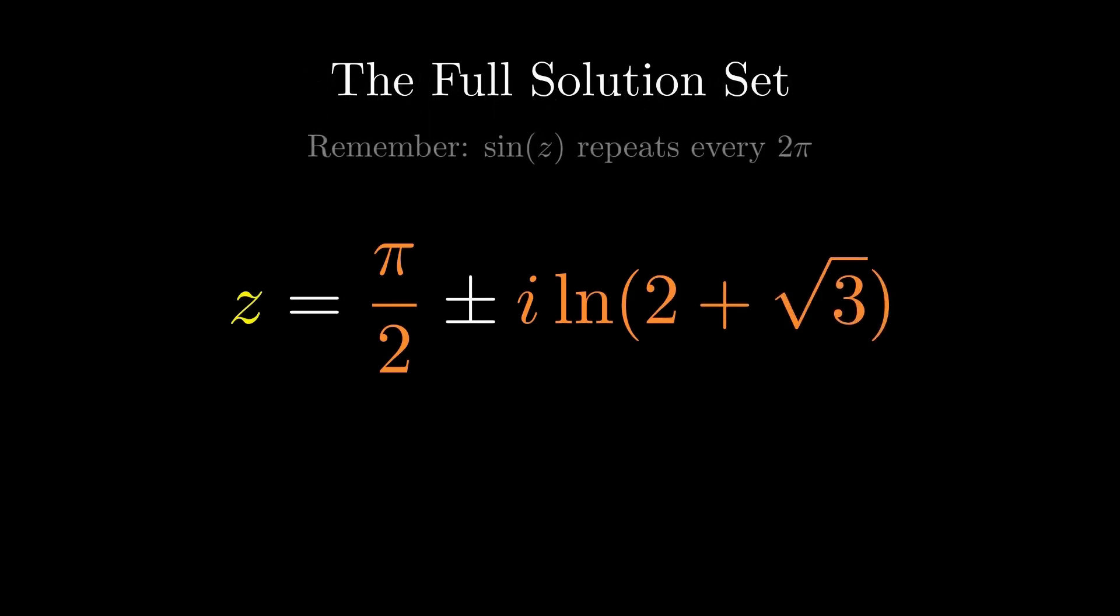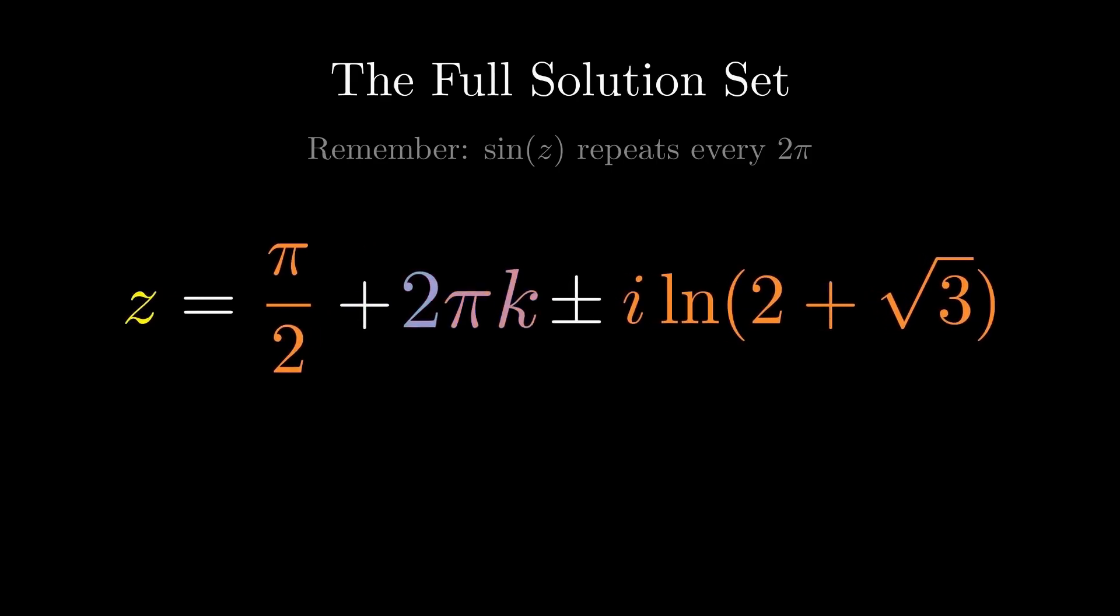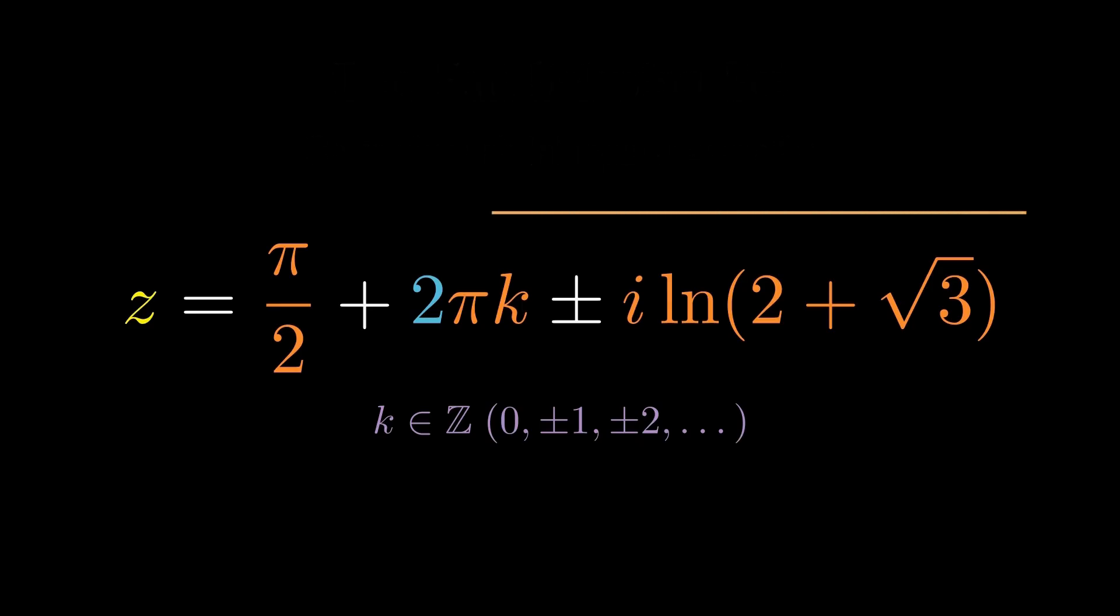Here's the full solution set. First, the two principal solutions. z equals pi over 2 plus or minus i ln of 2 plus root 3. Now the key idea, sine of z repeats every 2 pi. So we add the periodic term, z equals pi over 2, plus 2 pi k, plus or minus i ln of 2 plus root 3. And k can be any integer, 0, plus or minus 1, plus or minus 2, and so on. That's the complete answer. Thanks for watching.